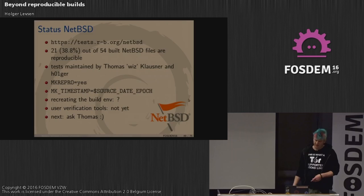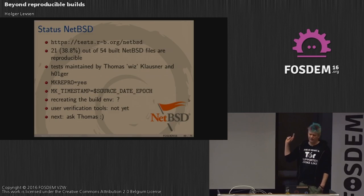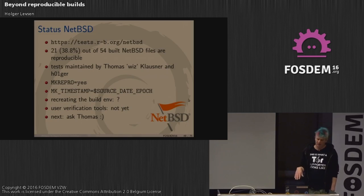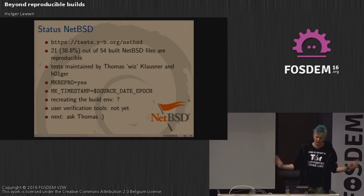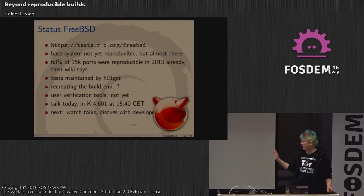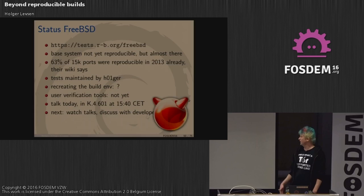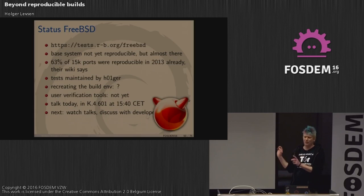NetBSD is much better now. Thomas Klausner has a branch where 52 out of 54 files are reproducible. You need to set the variable MK_REPRODUCIBLE=yes to make NetBSD build reproducibly, and also set MK_TIMESTAMP to SOURCE_DATE_EPOCH. FreeBSD's base system is not yet reproducible but almost — there are five patches. The port system was already 65% reproducible two years ago according to a wiki page, though I'm not sure all our test variations were applied.